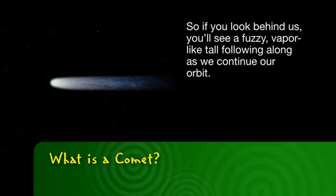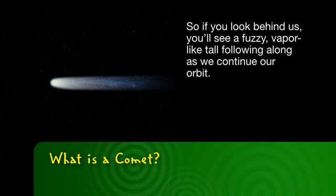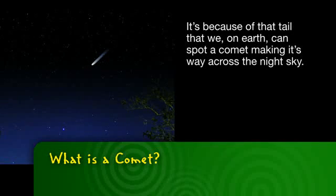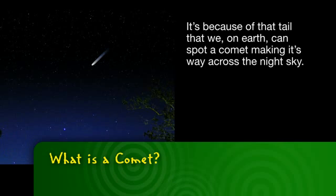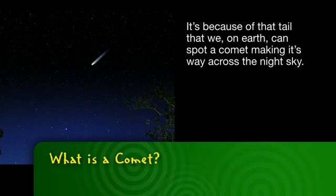So if you look behind us, you'll see a fuzzy, vapor-like tail following along as we continue our orbit. It's because of that tail that we on Earth can spot a comet making its way across the night sky.